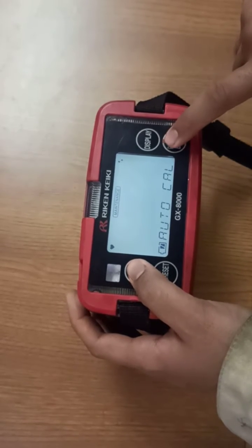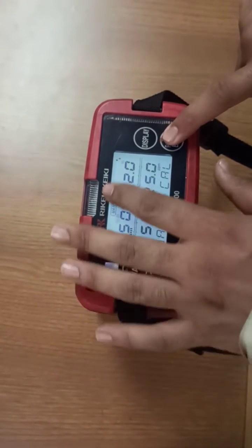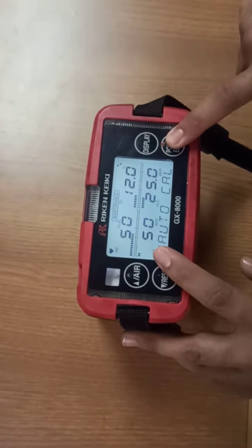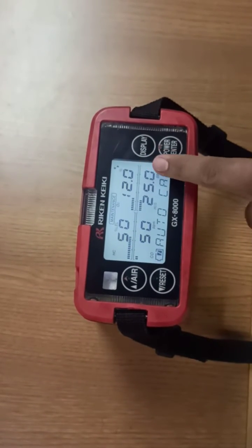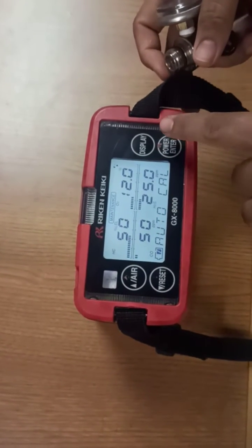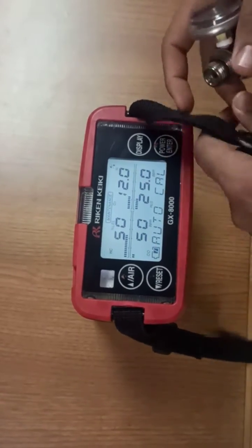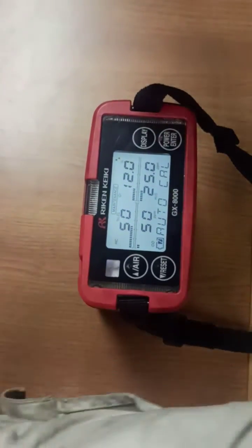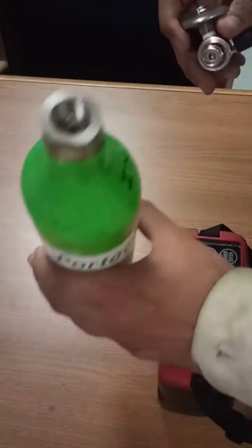Now it has gone into auto calibration mode. These are the alarm settings shown. If you press enter again, it will start calibrating and measuring gas. After this, we take the bottle.